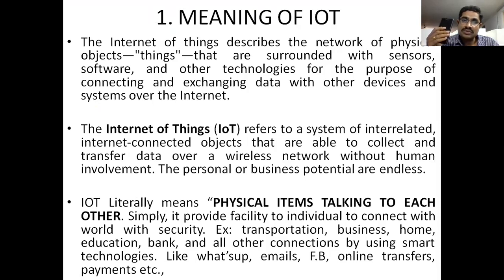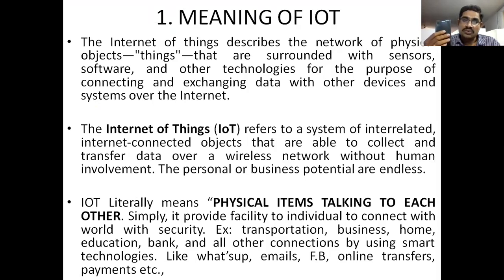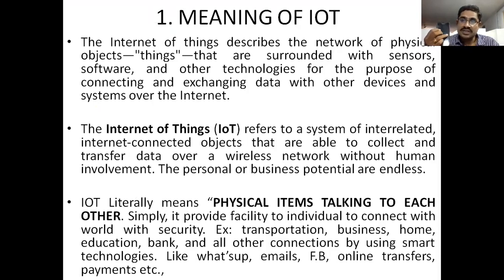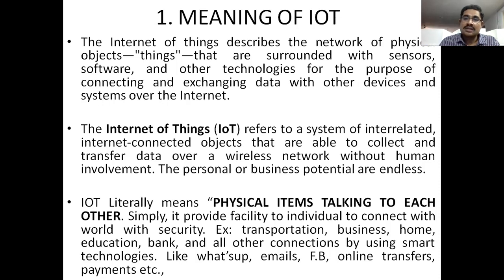By using mobile, we can transfer our goods and funds to other persons, place orders, do shopping, and receive goods. By using this mobile and its related apps, we can know each and every piece of information. IoT means the development of these apps in our mobile — the individual person connected with the world by using smartphones and smart apps. That is the concept of smart technologies.